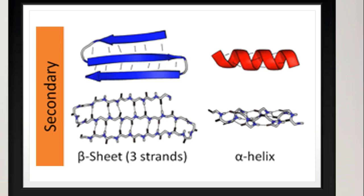Alpha helix is a uniform geometric structure, and each turn of the helix contains 3.6 amino acids. This helix structure is maintained by the formation of hydrogen bonds among amino acid molecules in successive turns of the spiral.